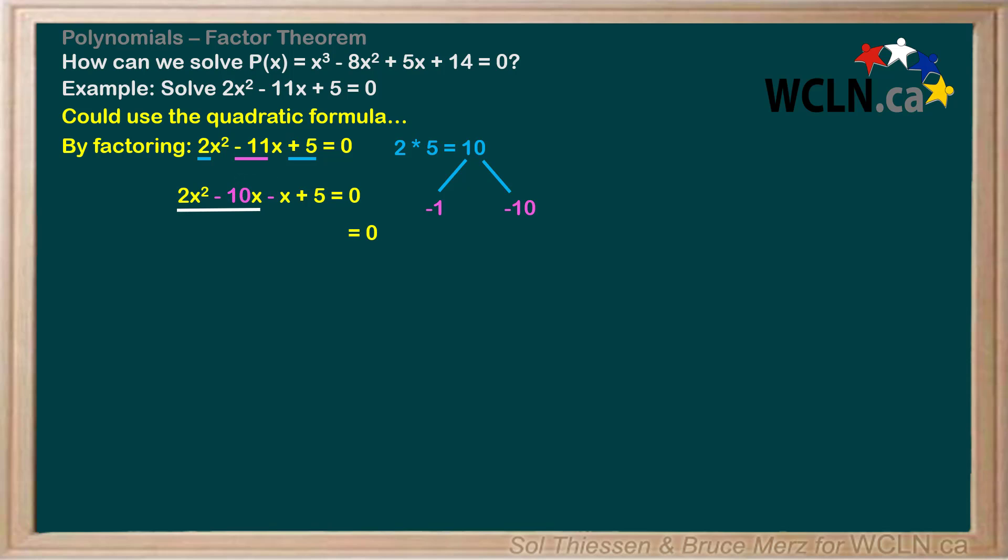Now from the pair of terms on the left, we pull out the greatest common factor, which is 2x, since both coefficients are even and both have an x. This gives us 2x times (x - 5). From the pair of terms on the right, we pull out the common factor of -1, which leaves us with -1 times (x - 5).